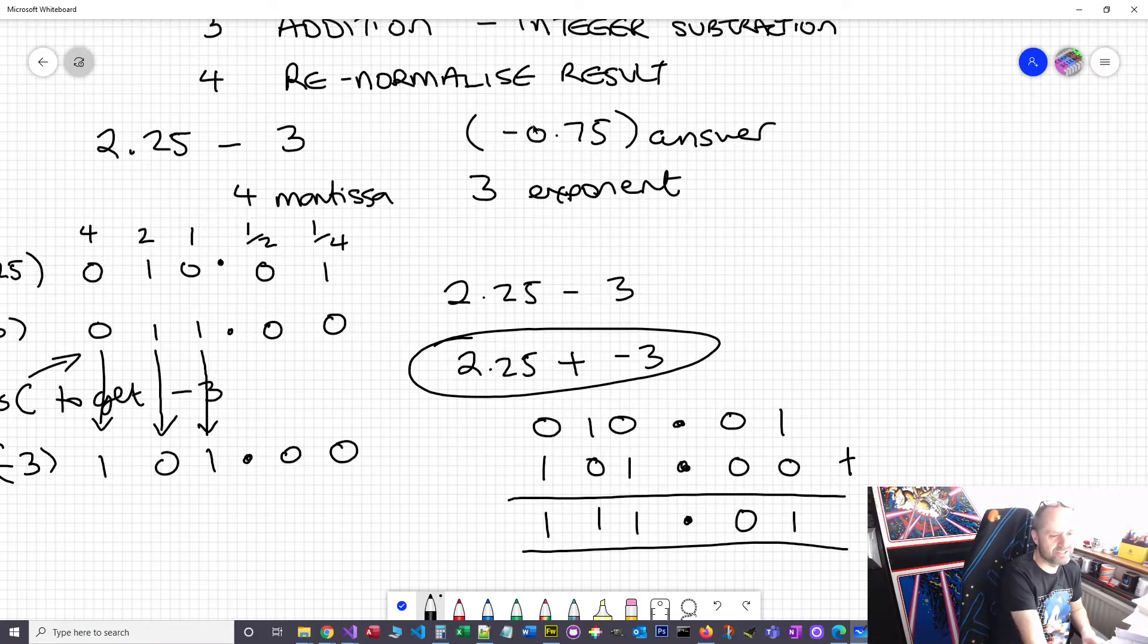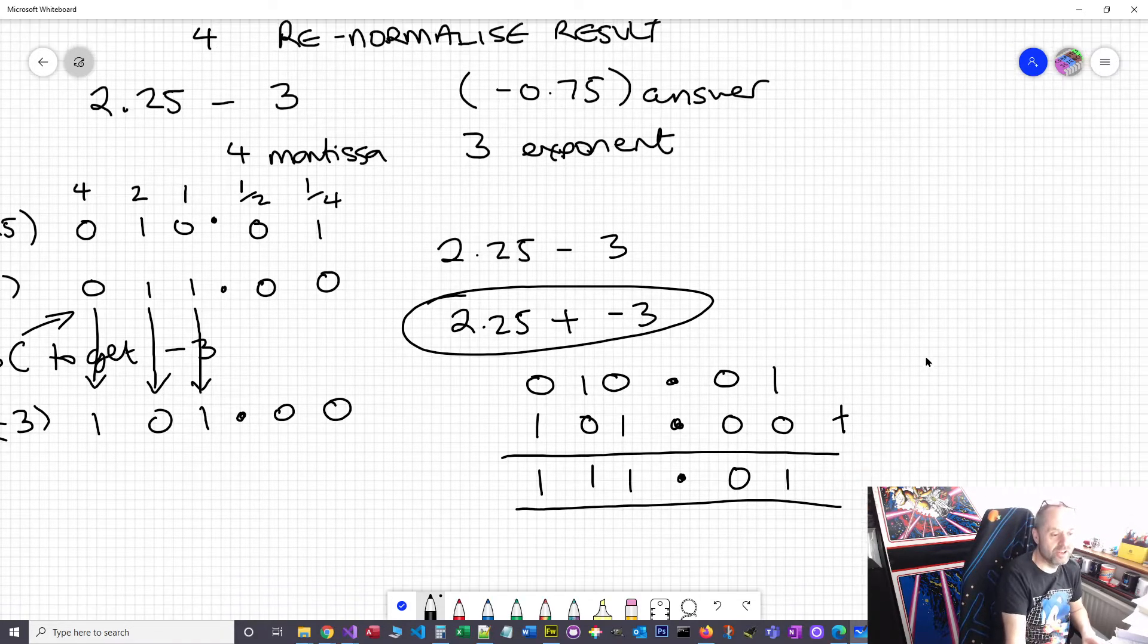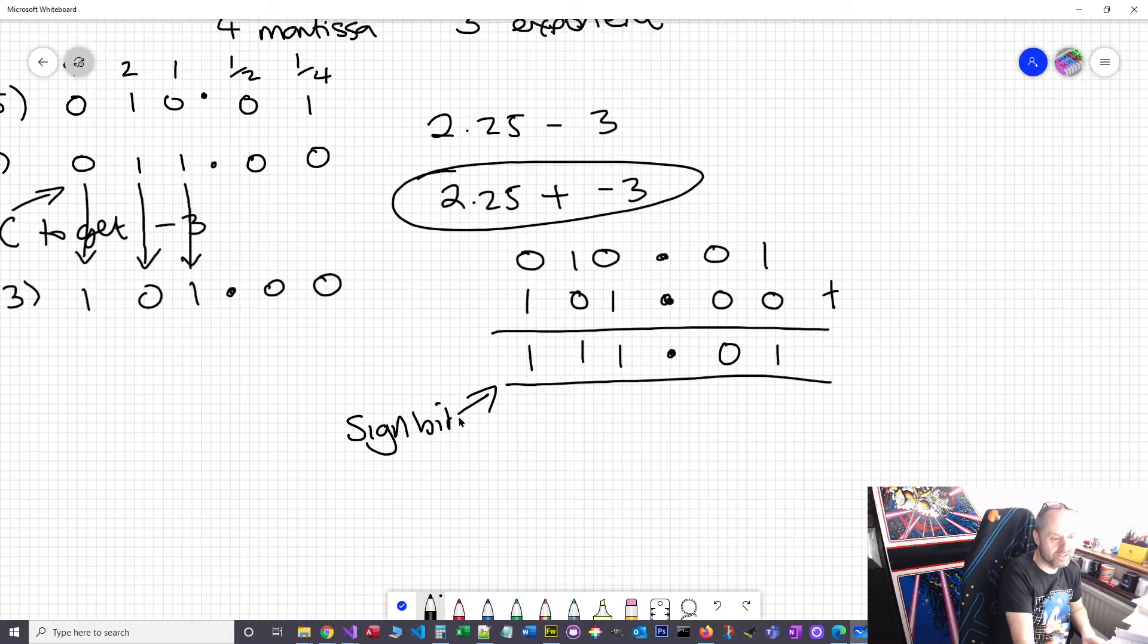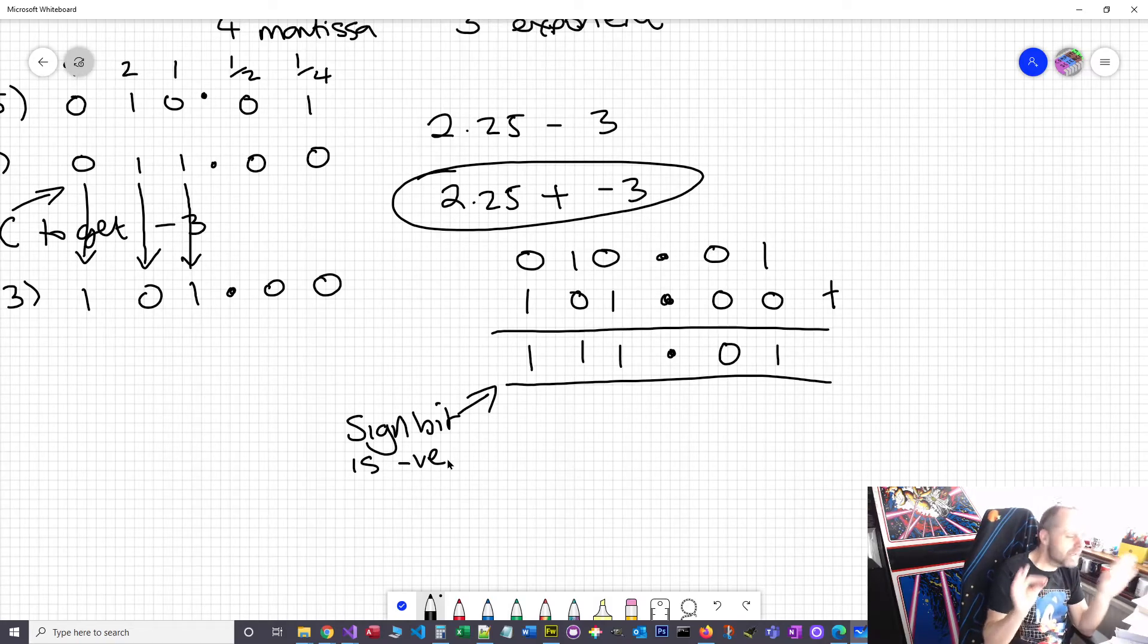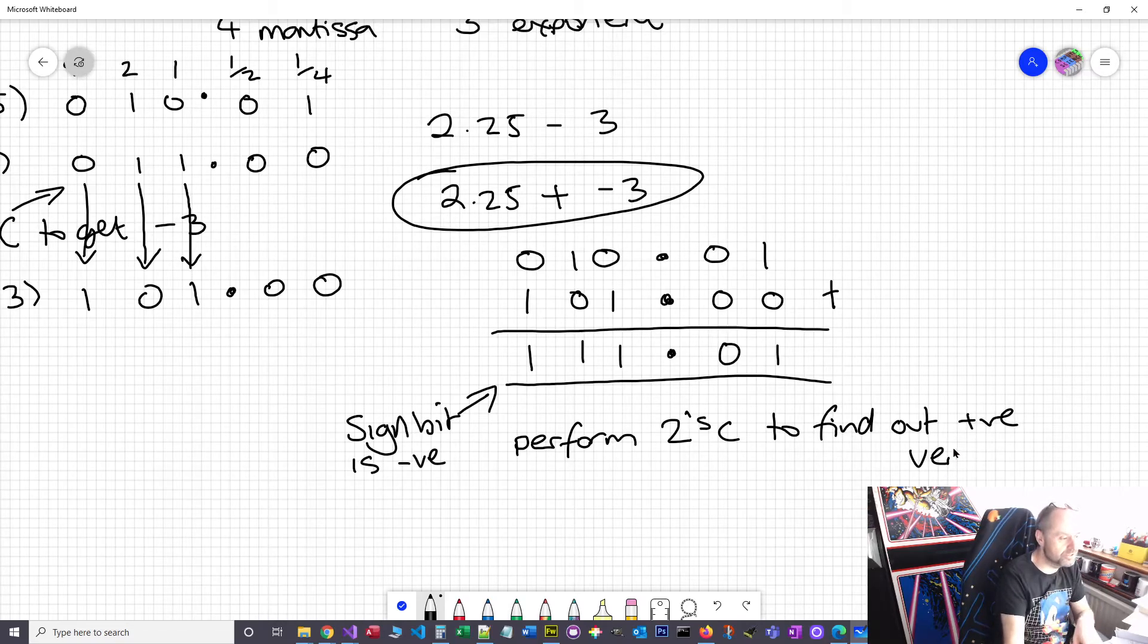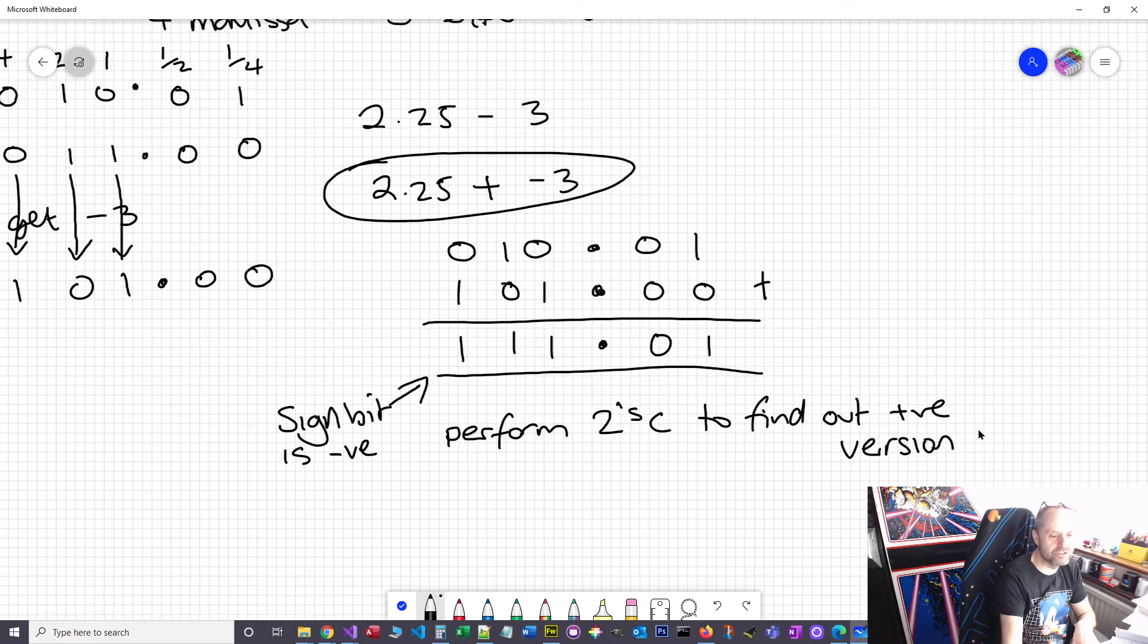We said we were going to get a negative answer, negative 0.75. If we look, the sign bit is correct - the sign bit is negative, so we've at least got a negative number. But I don't know what it is because I can't read two's complement, and I'm not going to be clever enough to read it. So what we can do is two's complement it to find out what that number is.